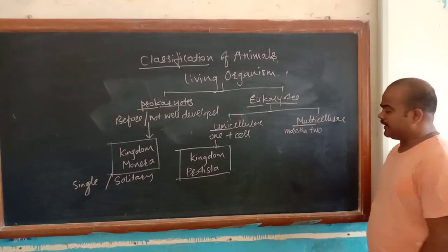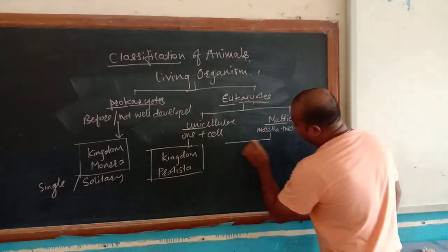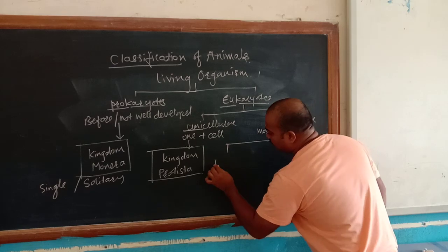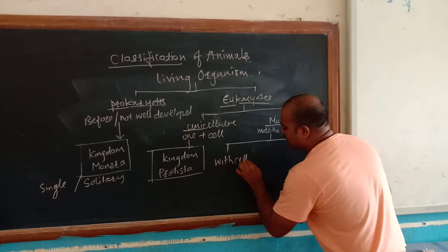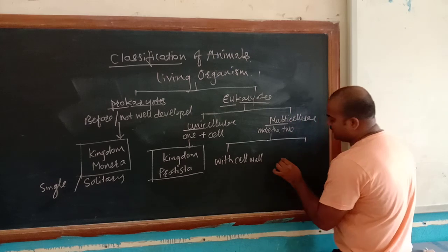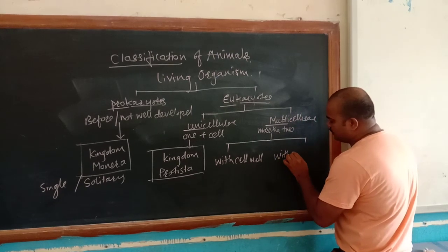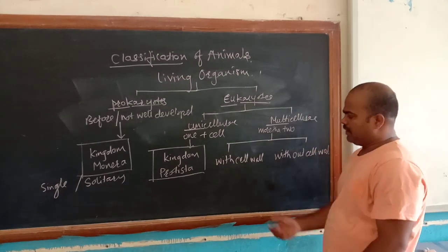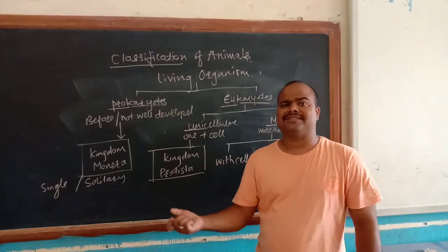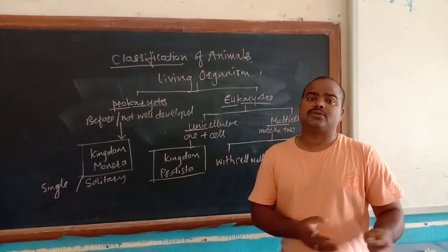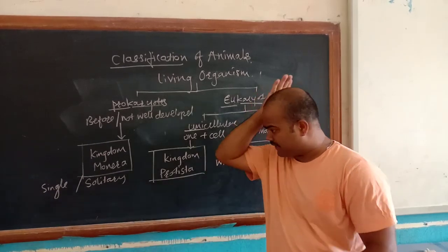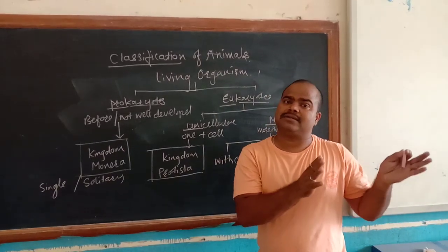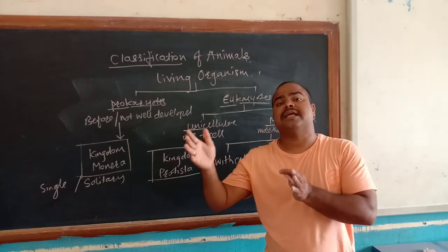In the multicellular organism, they are again categorized into two subtypes: first one is with cell wall, and second one is without cell wall. In 7th, 8th, or 9th standard, we studied about two types of organisms — plants and animals. Plants have a cell wall and animals have a cell membrane.